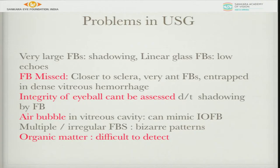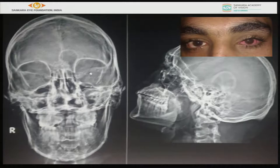Problems with B-scans include: foreign bodies can be missed, integrity of the eyeball must be confirmed before performing, air bubbles can be confused with foreign bodies, and organic matter is difficult to identify. UBM is useful — as in this case, the X-ray shows the foreign body in the eye with PL-negative vision, but the B-scan cannot identify it because the eye is very soft.